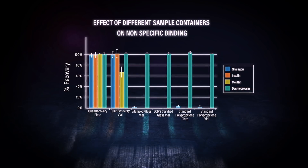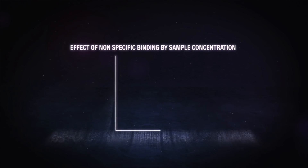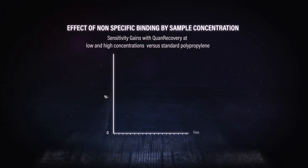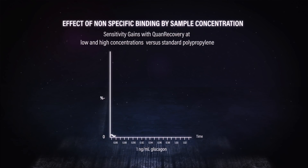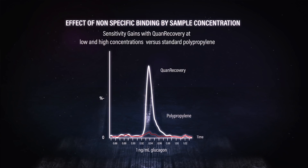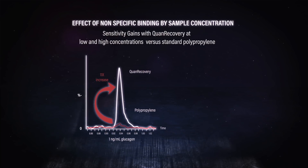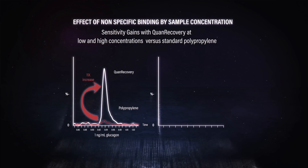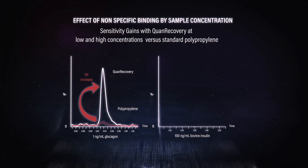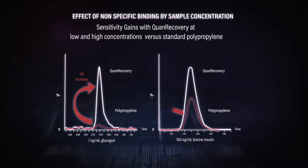We didn't add a carrier protein here — we just wanted to see the pure effect of the container on nonspecific binding. To really address the scientist's question, it was important to look at different concentrations of peptide. At one nanogram per mil of glucagon, comparing an optimized container to a standard polypropylene container, we actually get an 11-times increase in signal with the optimized container. That's at a very low concentration — which is where we expected the problem to be. But remarkably, even at a high concentration of 100 nanograms per mil of bovine insulin, comparing the optimized container to a standard polypropylene container, we still see a two-times increase in signal.